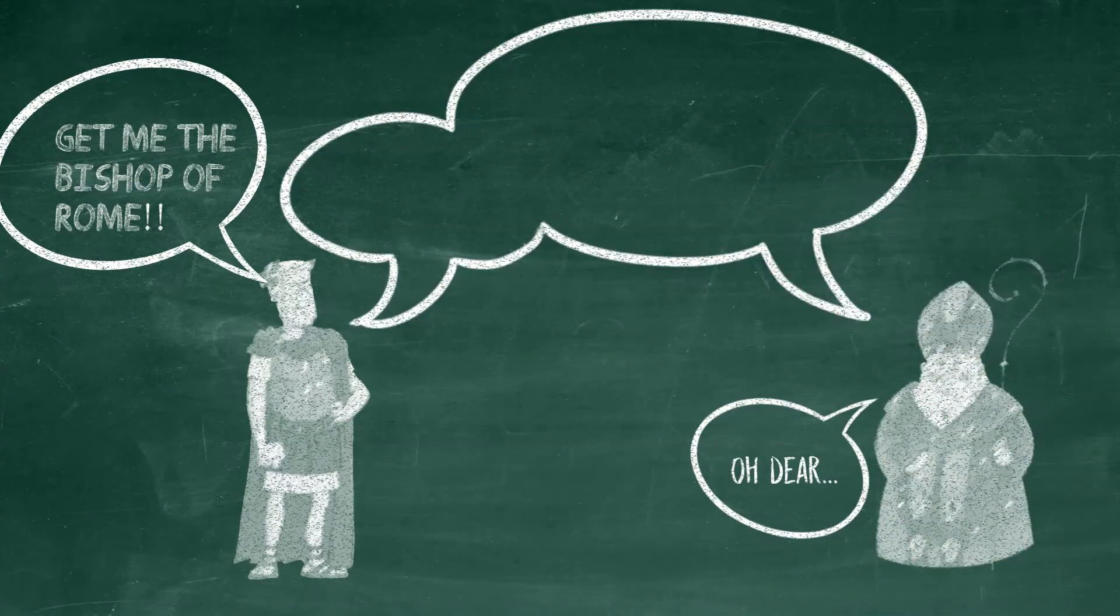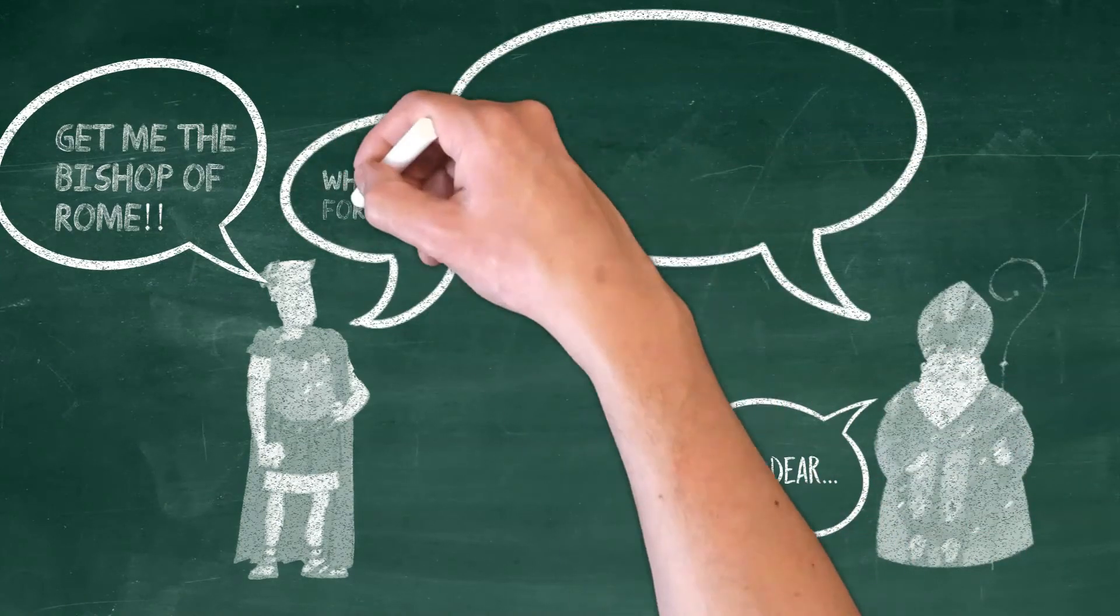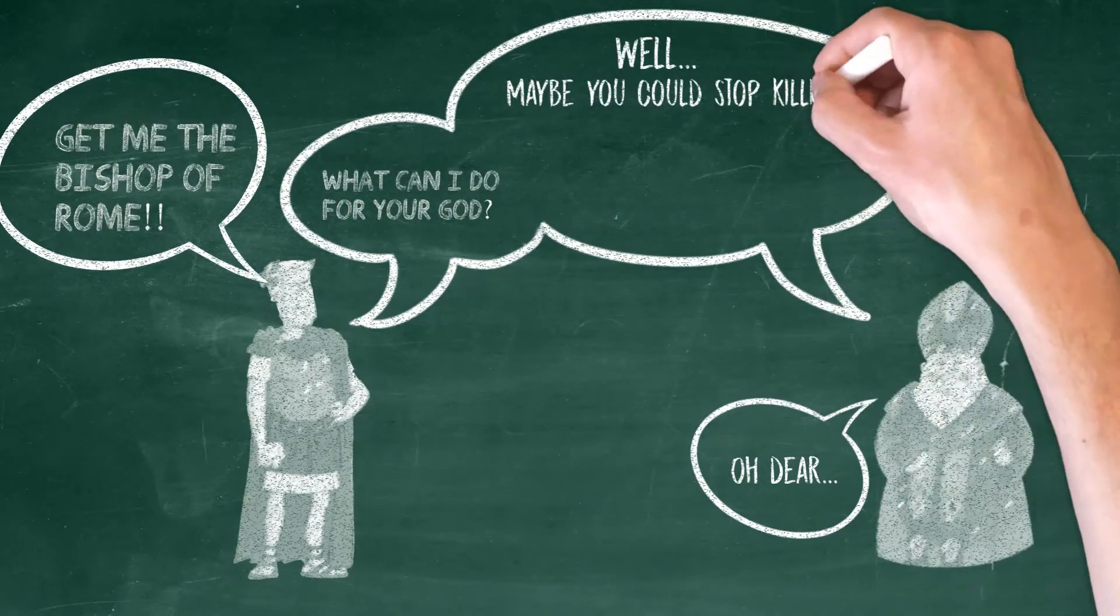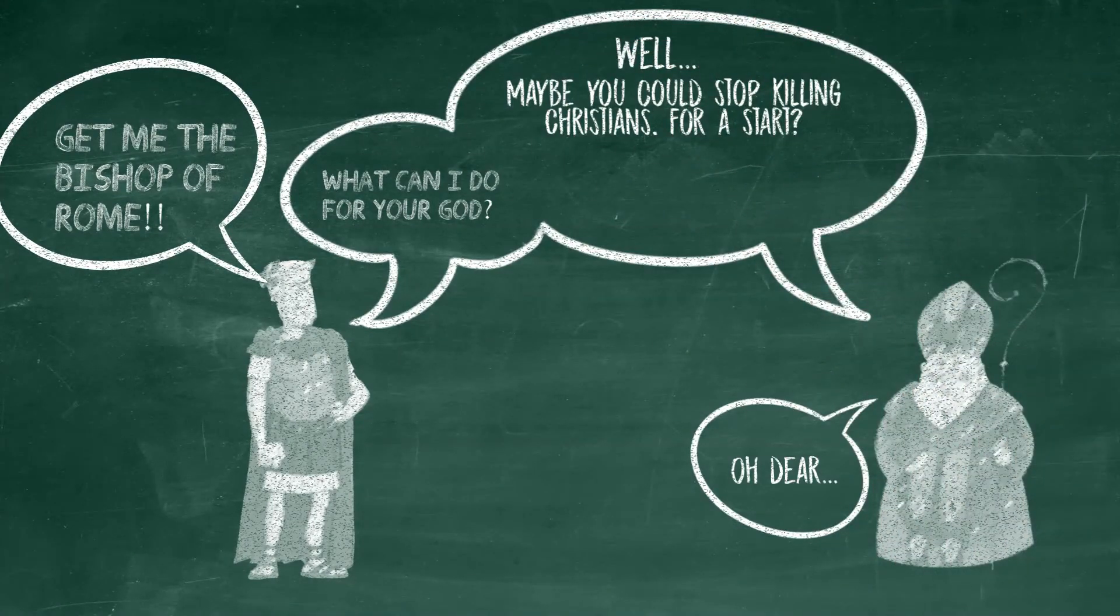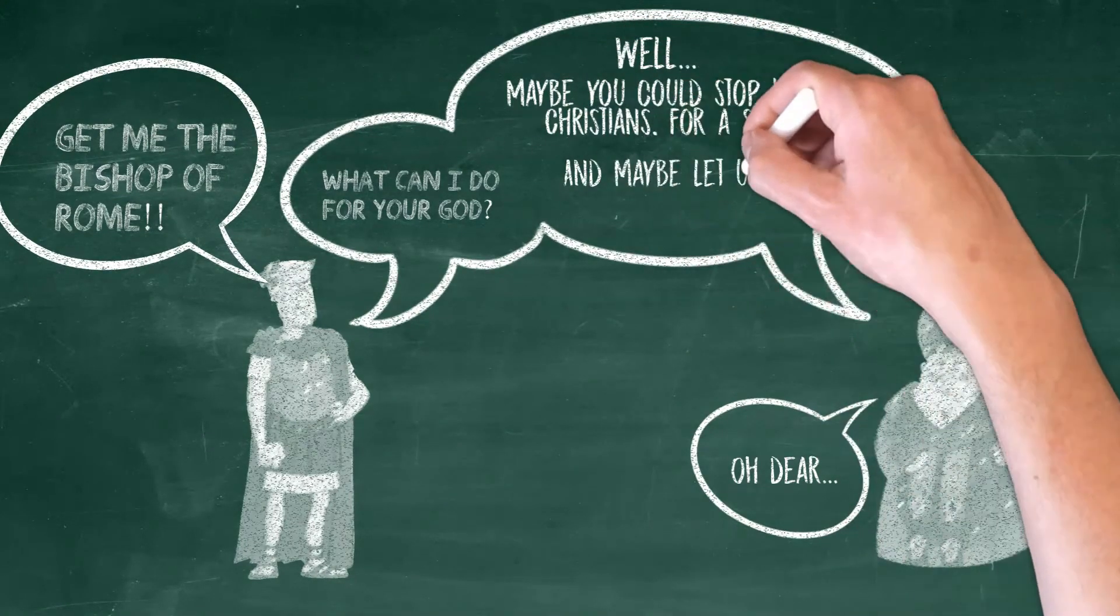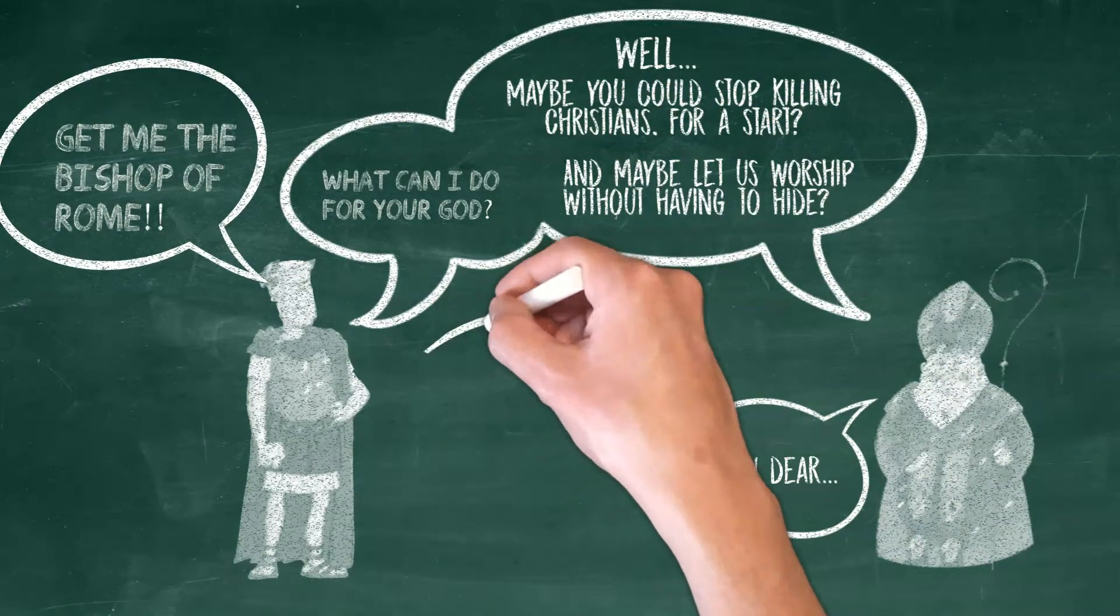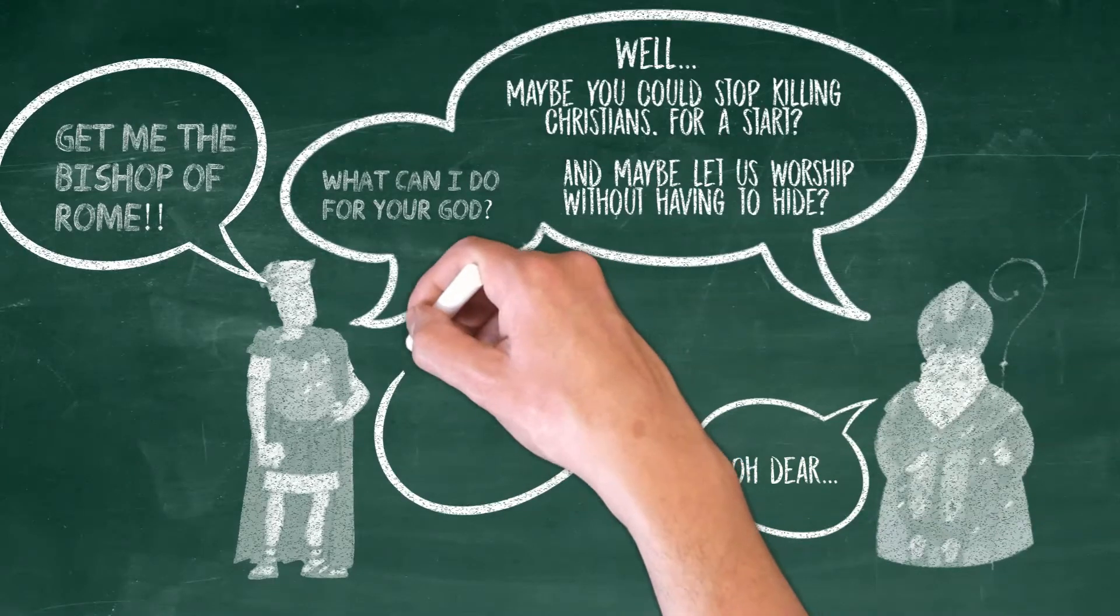But instead, what happened is Constantine asked him, what can I do for your God? And the bishop of Rome asked for two simple things. First, that Constantine would stop killing Christians. Second, that he would let churches have places where they could worship in public, what we might now today call church buildings.